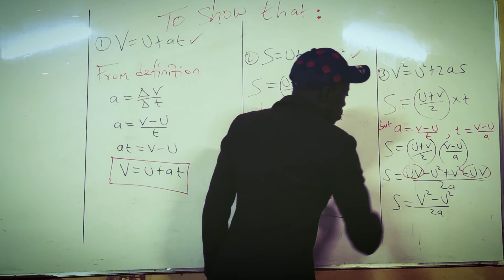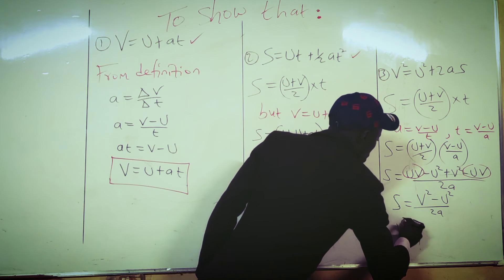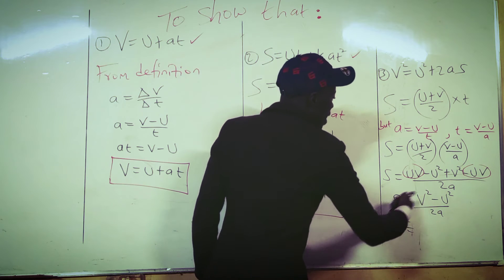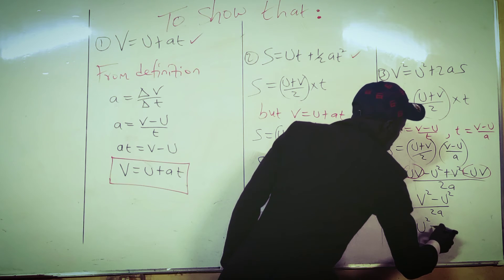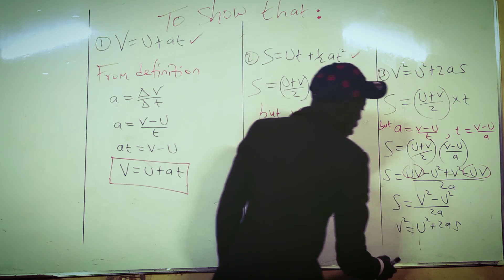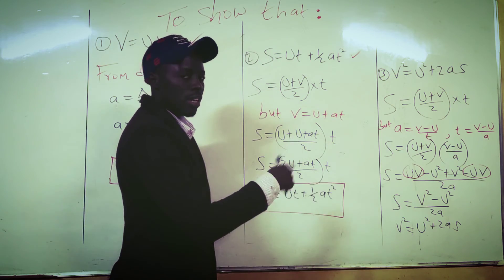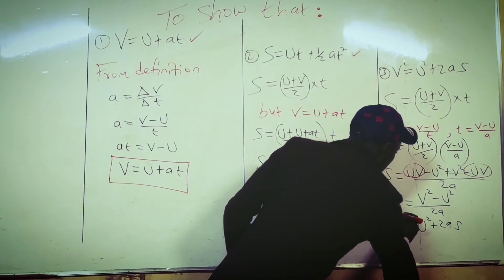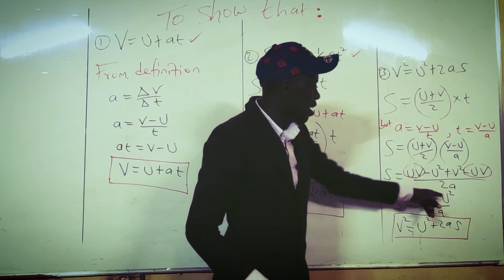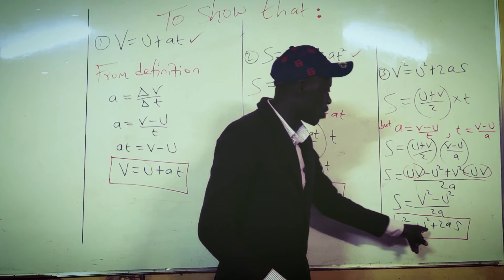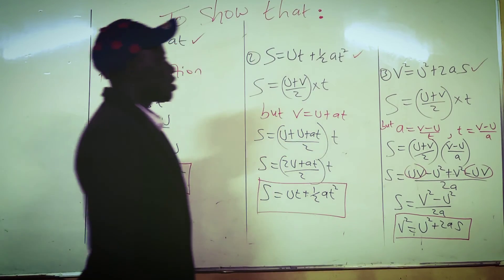Multiplying both sides by 2A gives us 2AS equals V squared minus U squared. Bringing U squared to the other side, V squared equals U squared plus 2AS. That is how we derive the third Newton's equation of linear motion.